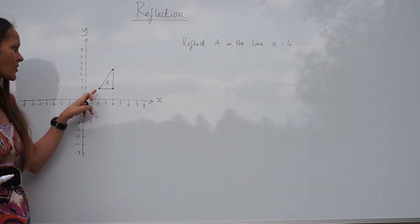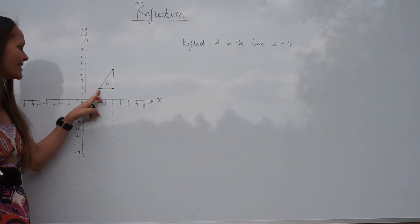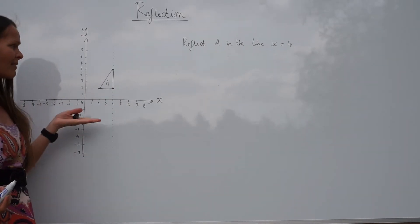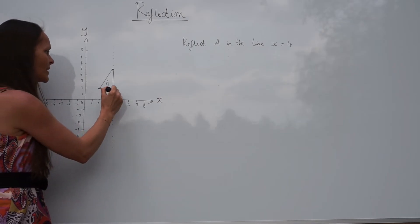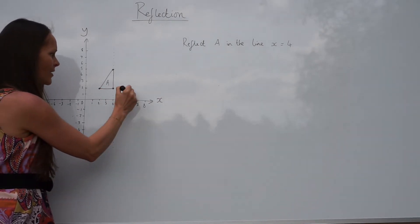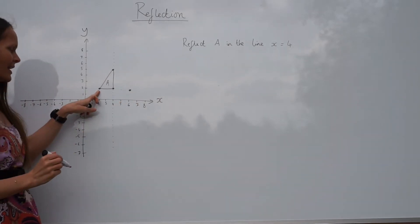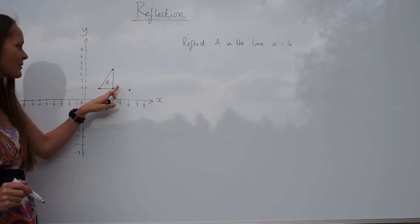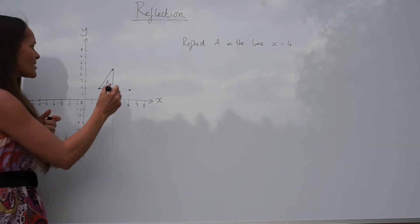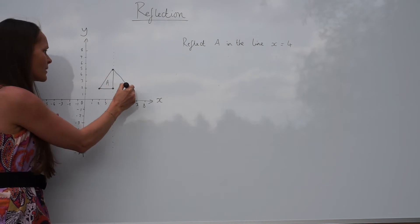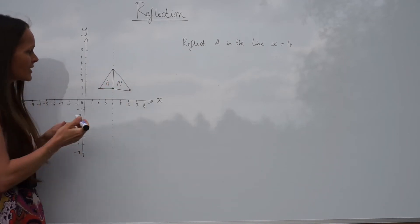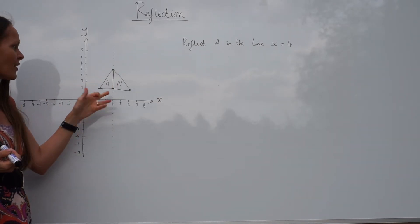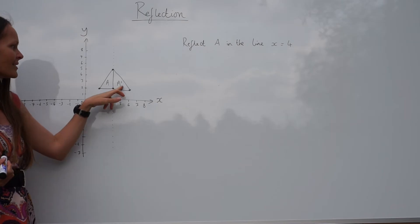The only point that's going to reflect or move is this point here. It is two units away from the mirror line x equals four, so you need to count two units the other way. This point on the triangle is reflected over here — exactly the same distance from the mirror line but on the opposite side. Now you can join up the points. That is the image of A. It doesn't matter that it lies on the mirror line — we've done the reflection.